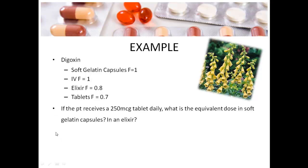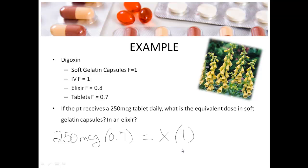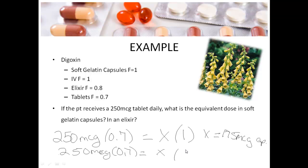So if we have 250 micrograms of the tablets, and its bioavailability is 0.7, we set that up for capsules first — X amount of dose, with the bioavailability of the capsule being 1. So you take 250 times 0.7, divide by 1, and that gives us X equals 175 micrograms for the capsules. We set that up again for the elixir: 250 times 0.7 equals X times 0.8, and X equals 219 micrograms. So it's not as simple as that one-to-one ratio, but it's really not that difficult.